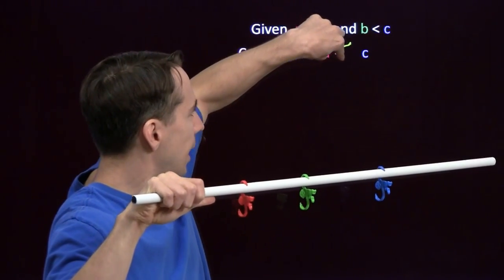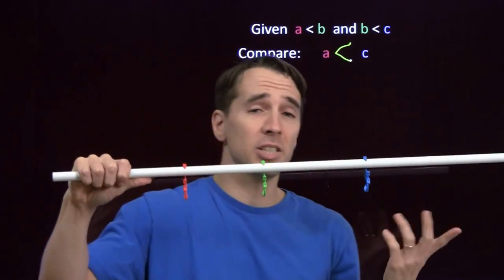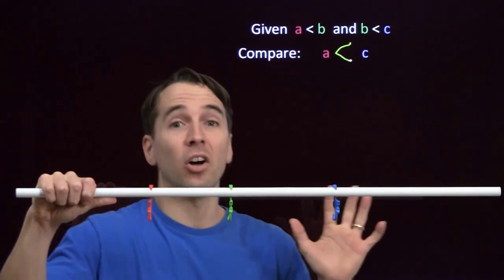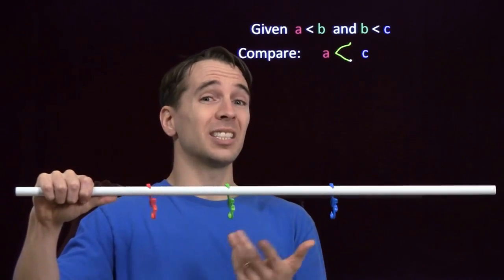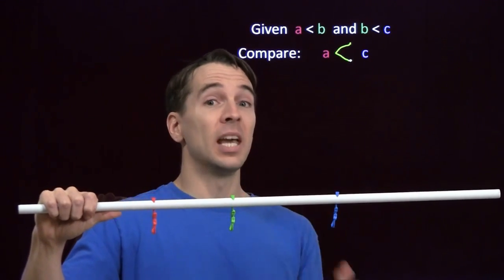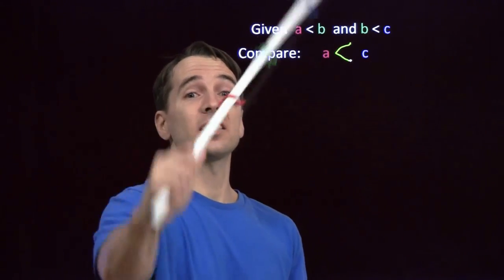So this has to be a less than sign. Now mathematicians have a very fancy name for this. They call it transitivity. I just call it obvious. But you have to be careful with inequalities, because not all properties are so obvious. And we'll talk about that in the next video.